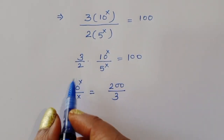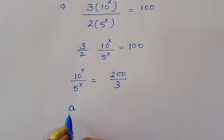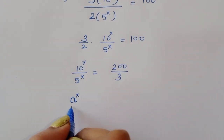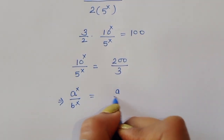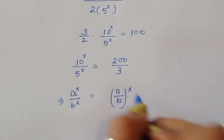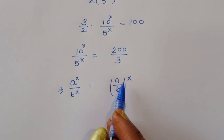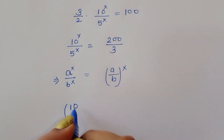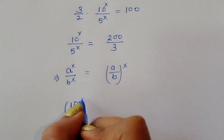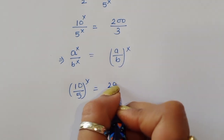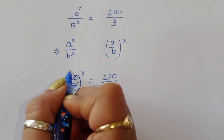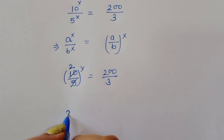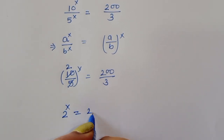Now, using the formula that a^x divided by b^x equals (a/b)^x, we can write 10/5 to the power x, which equals (200/3). So the left side becomes 2^x is equal to 200 divided by 3.